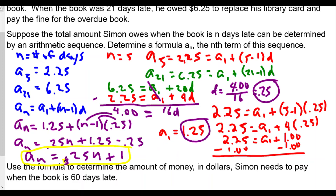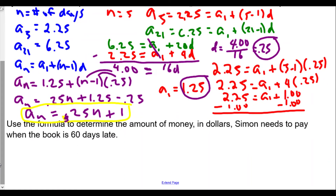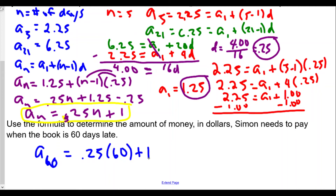Continuing with this question: use the formula to determine the amount of money Simon needs to pay when the book is 60 days late. A of 60 equals 0.25 times 60 plus 1. We get 15 plus 1, so after 60 days his fees will be a total of $16.00.